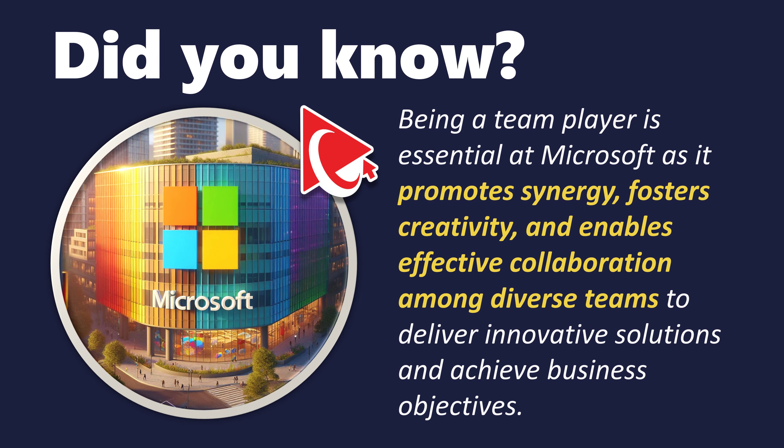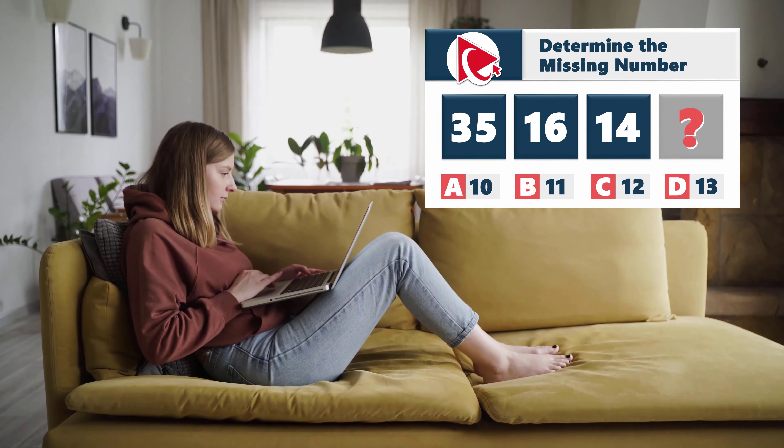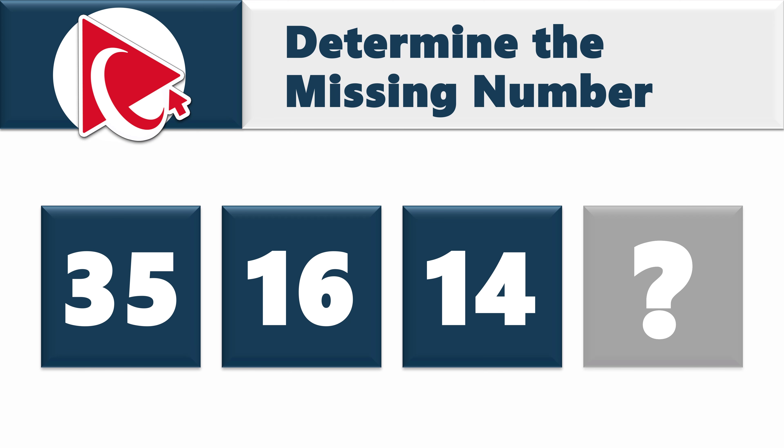And now you have a question to practice your skills. This practice question is waiting for your individual touch to get solved, and I have full confidence that you can do it. You're presented with the sequence. The numbers in the sequence are 35, 16, 14, and then comes the missing number you need to calculate out of four possible choices.